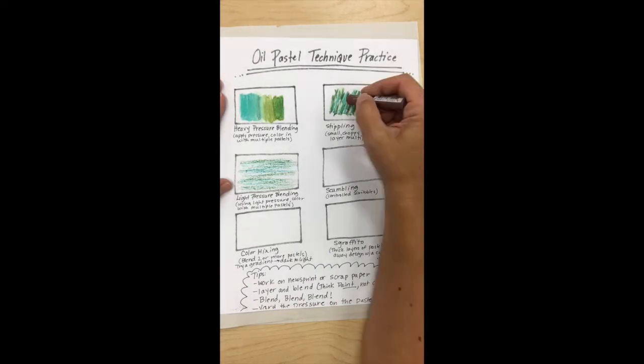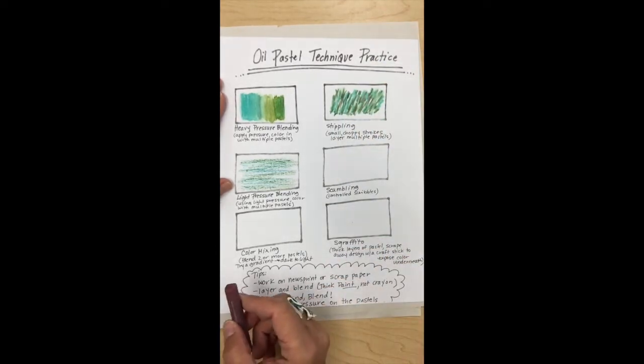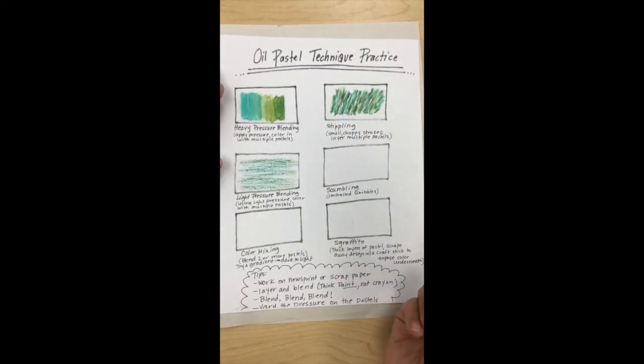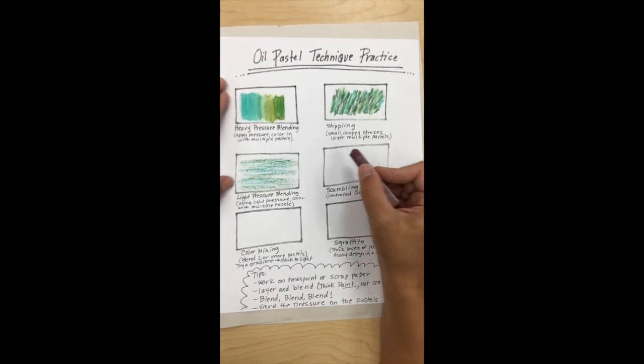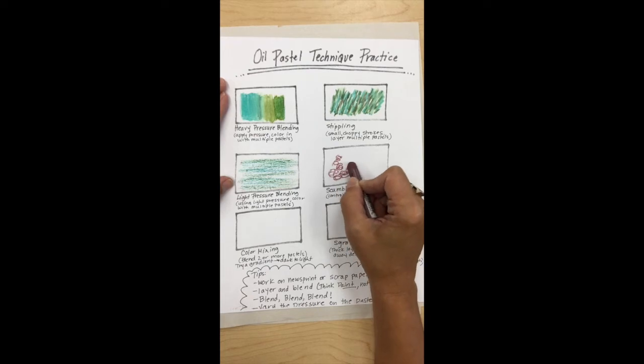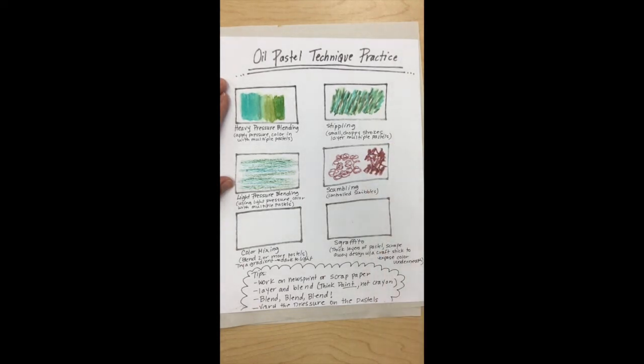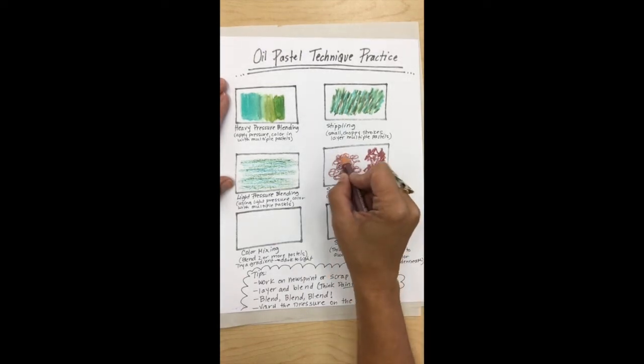Scumbling is kind of a weird word but basically it's controlled scribbles. So you can go round to create texture like this, you know, you can do little X's or V's or whatever, but you still blend. So I wouldn't just leave it like that, I would go back over the top, kind of create more texture.